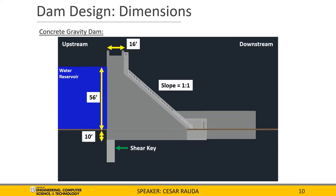Now that we have established a baseline for the required dimensions for the project, we can now show you a cross-section of the dam. On the top, we have the 16-foot width of the access road, which will be built atop the dam. To the right, we have the slope of the downstream side, which is one-to-one. On the left, we have the water line going up 56 feet. The total height will be 66 feet, with the freeboard and the spillway included. Going down to the bottom portion, we can see a 10-foot depth for the foundation to be built upon the rock layer.